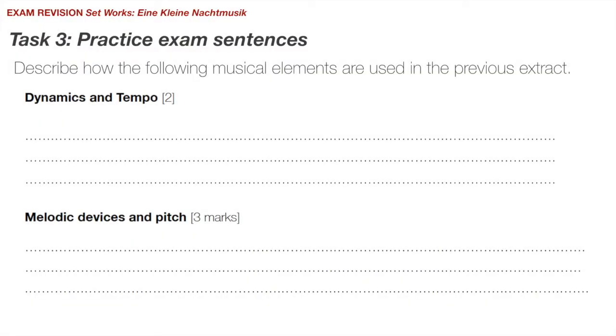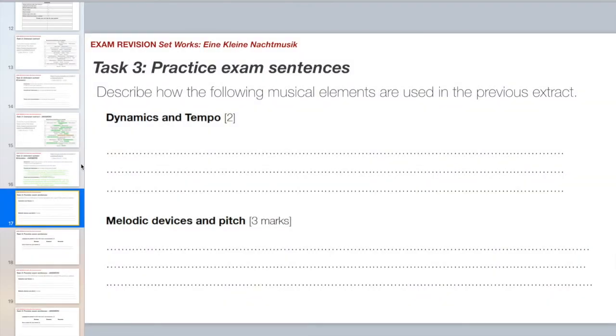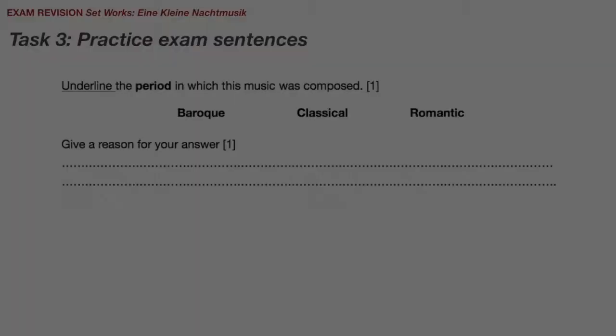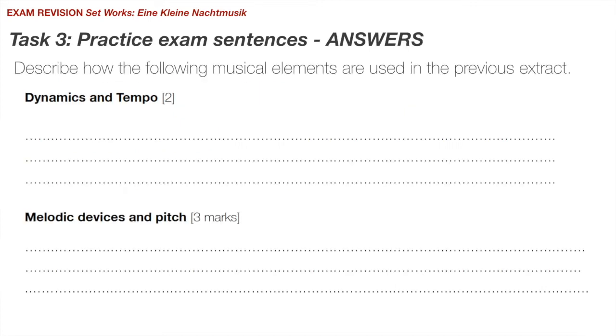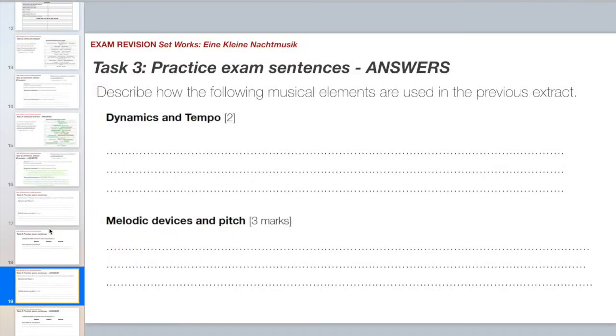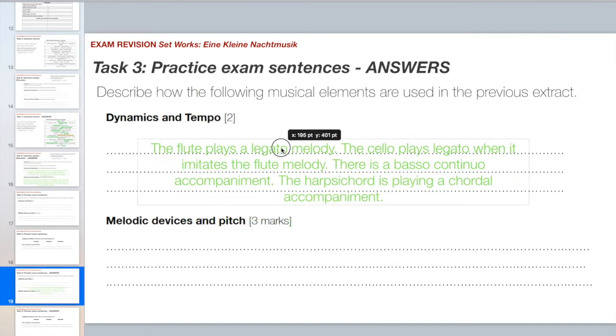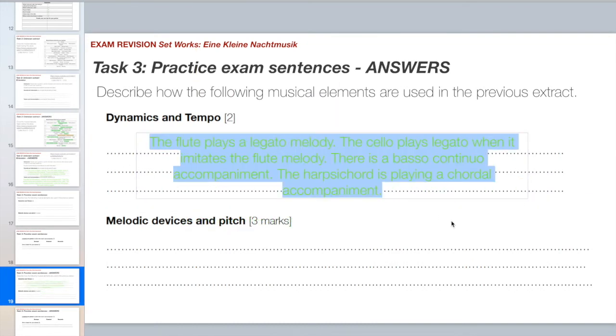Task three, practice exam sentences. So, we're describing how the following musical elements are used in the previous extracts, dynamics and tempo, and melodic devices and pitch. Well it's the exact same extract we just listened to, thinking about the dynamics and the tempo. Then we want to think about what period we think this was composed in, was it Baroque, Classical or Romantic, and we need to give a reason. This is a really common exam question. So let's look at the answers. If you're not ready, please pause and finish your answers.